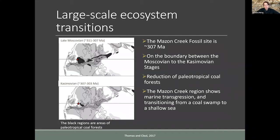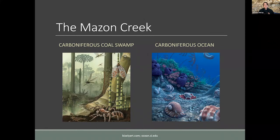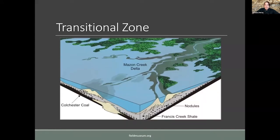The Maison Creek sits in a pretty much transitional environment, probably quite near the shoreline. In terms of its position in time, it's right on the boundary between the Moscovian and Kasimovian stages, during a time of large-scale marine transgression — transitioning basically from a coal swamp to a shallow sea. When sea level rises, it covers the very flat lowland near-shore areas where coal swamps grew. The coal swamps are the black areas in these maps.